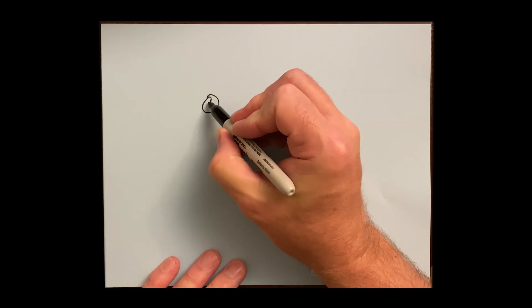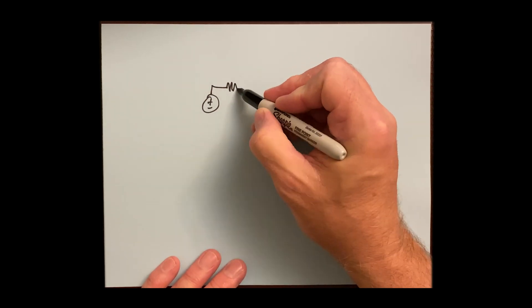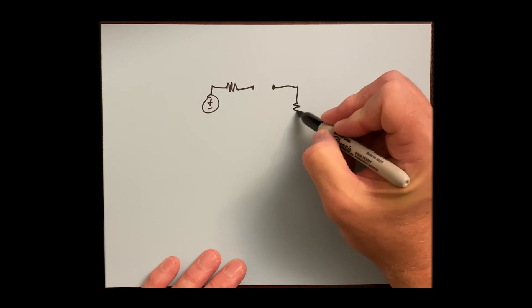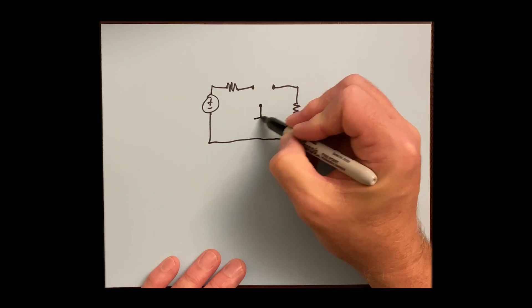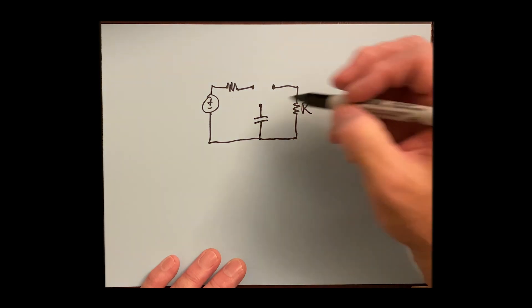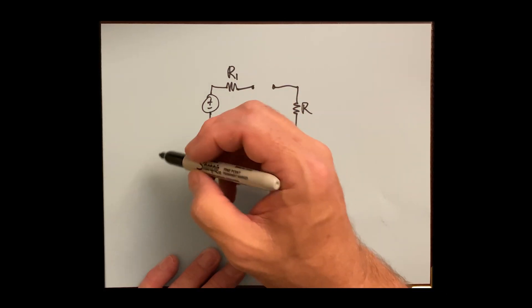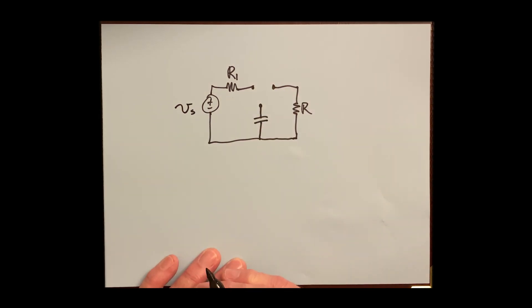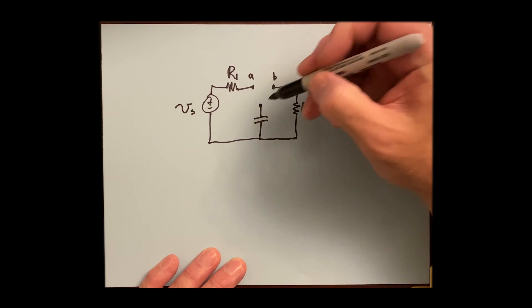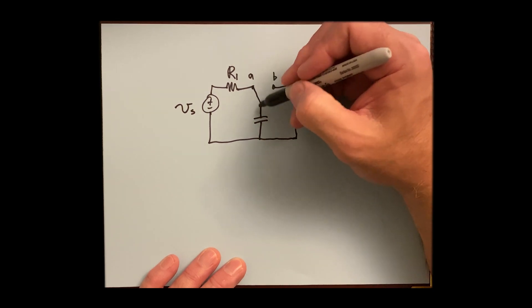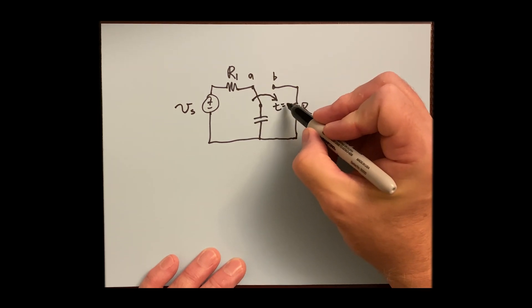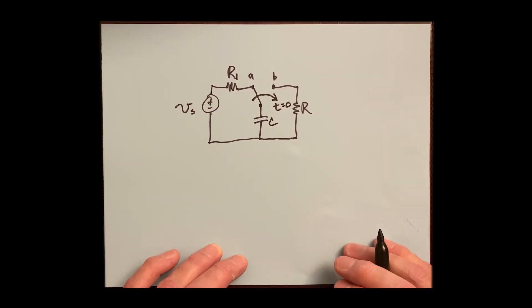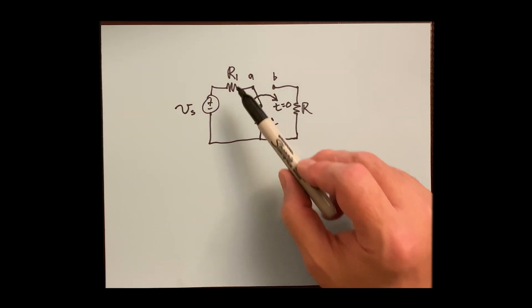We're looking at the natural response for RC circuits. We have a voltage source, a resistor in series, and a switch. There's another resistor and a capacitor in the center. We'll call this one R and the other R1, and the source is V_S. The switch has two positions: position A and position B, and it toggles at T equals zero. The capacitor has capacitance C.